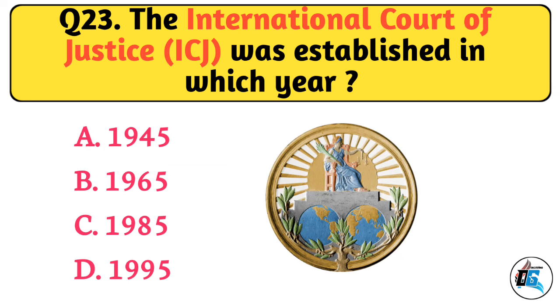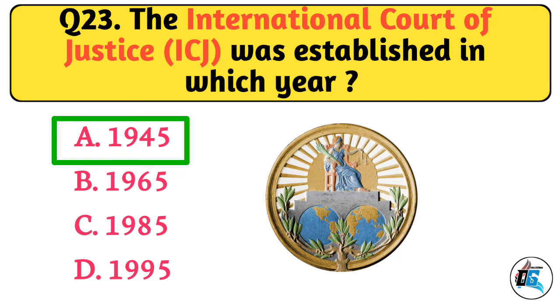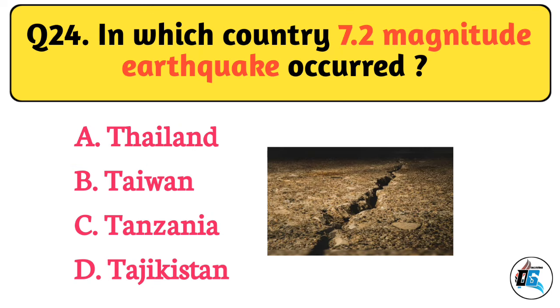Question No. 23. The International Court of Justice was established in which year? The right answer is Option A: 1945.